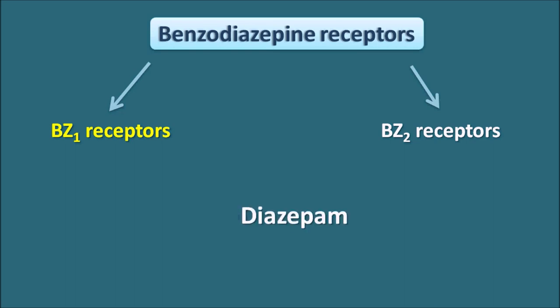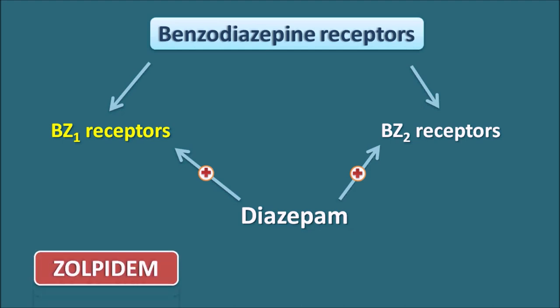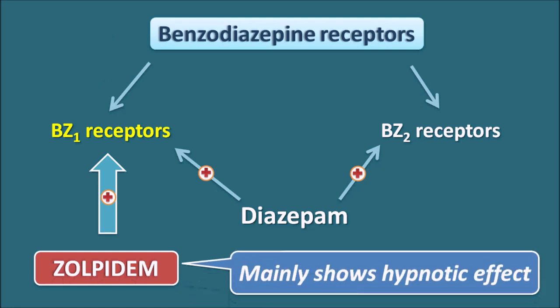Benzodiazepines like diazepam are non-selective — they can activate both benzodiazepine-1 and benzodiazepine-2 receptors. On the other hand, Zolpidem selectively activates the benzodiazepine-1 receptors, which is why it acts as a hypnotic drug. This is one key difference between the benzodiazepines and Zolpidem.